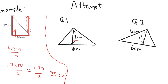So the first one is three multiplied by eight and divide by two. So three multiplied by eight is 24, and then divide that by two is 12 centimetres squared. That's the area of that triangle.